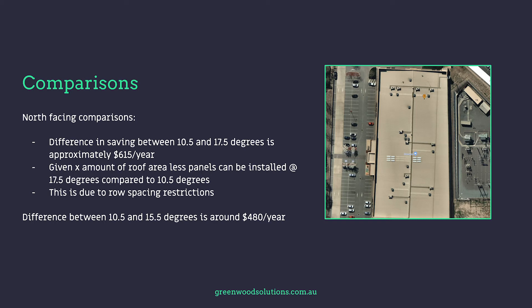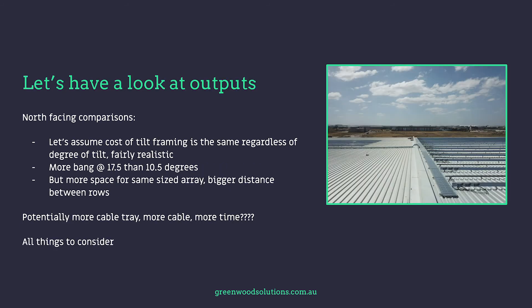Given a fixed roof area, fewer panels can be installed at 17.5 degrees compared to 10.5 degrees due to row spacing restrictions — see our video on row spacing and commercial solar systems. We'll assume the cost of tilt framing is the same regardless of the degree of tilt, which is fairly realistic. But more space needed for the same size array means a bigger distance between rows, and potentially more cable tray, more cable, and more time spent on the roof — all things to consider.